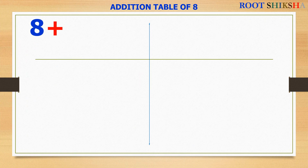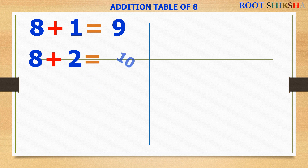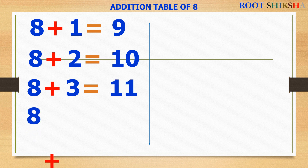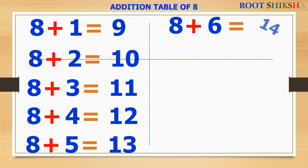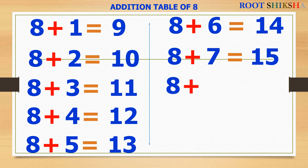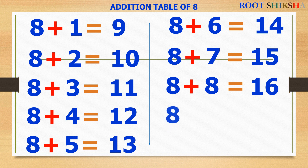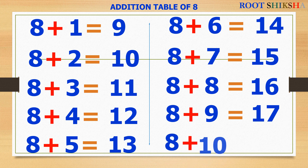8 plus 1 equals to 9. 8 plus 2 equals to 10. 8 plus 3 equals to 11. 8 plus 4 equals to 12. 8 plus 5 equals to 13. 8 plus 6 equals to 14. 8 plus 7 equals to 15. 8 plus 8 equals to 16. 8 plus 9 equals to 17. 8 plus 10 equals to 18.